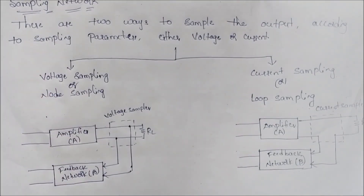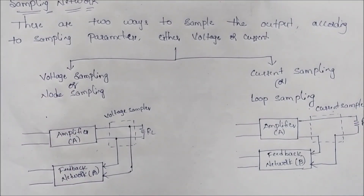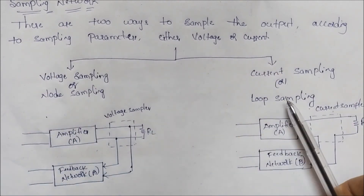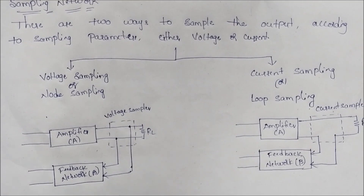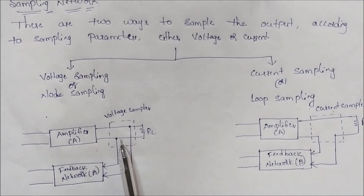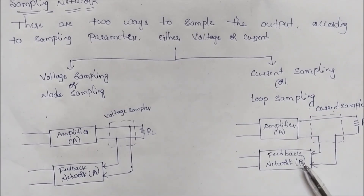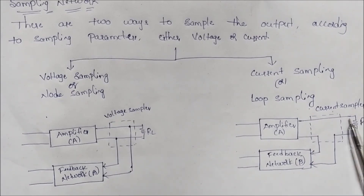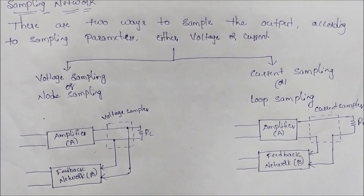For the sampling network, there are two types: voltage sampling and current sampling. In voltage sampling, the feedback network is connected in shunt at the amplifier output. In current sampling, the amplifier output is connected in series with the feedback network. This completes the explanation of each and every block of the feedback amplifier. If you like this video, please like, share, and subscribe.